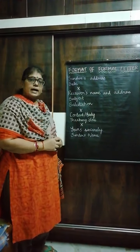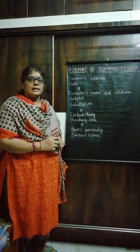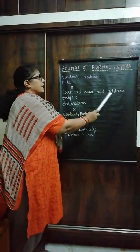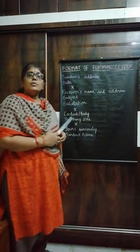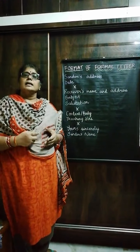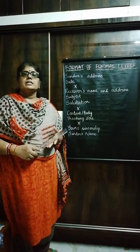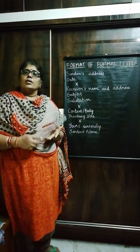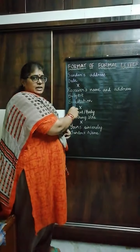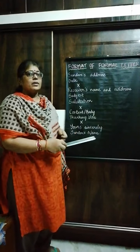Blank here means receiver's name and address. The receiver is the person to whom you are writing the letter. If you are writing to the class teacher or to the principal or to any organization, write their designation — if it is a class teacher, then write 'Class Teacher of so-and-so class and section and school.'